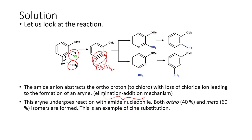If the NH2⁻ attacks ortho to the methoxy unit, we end up with the ortho product. If it attacks the meta carbon with respect to the methoxy ether, we end up with the meta derivative. Both products will be formed — the ortho isomer at around 40% and the meta isomer at 60% yield. So the meta isomer is the major product formed in this reaction.